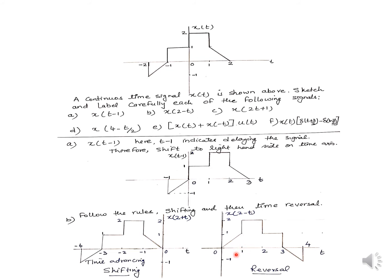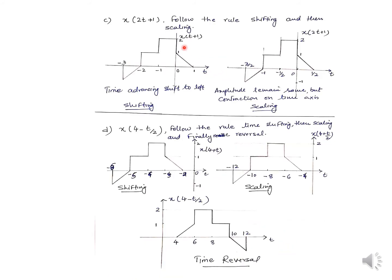When rotating, the amplitude values stay the same but you change the sign of the time axis values: minus 1 goes to plus 1, minus 2 goes to plus 2, minus 3 goes to plus 3, minus 4 goes to plus 4. The amplitudes and remaining properties of the signal remain unchanged. That completes X(2-T).